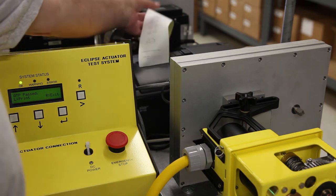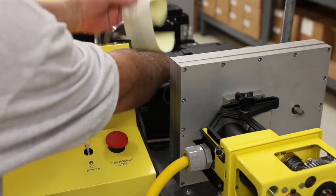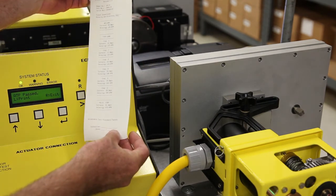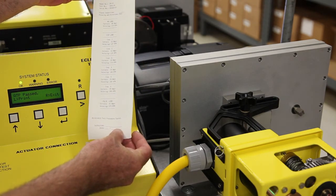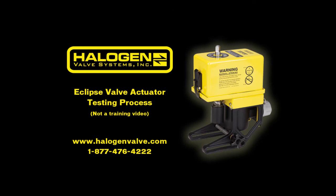This record is kept on file with other information associated with the specific Eclipse actuator by serial number. Halogen Valve Systems' commitment to ensuring our products perform to rigorous quality standards makes us the leader in emergency gas shutoff systems.